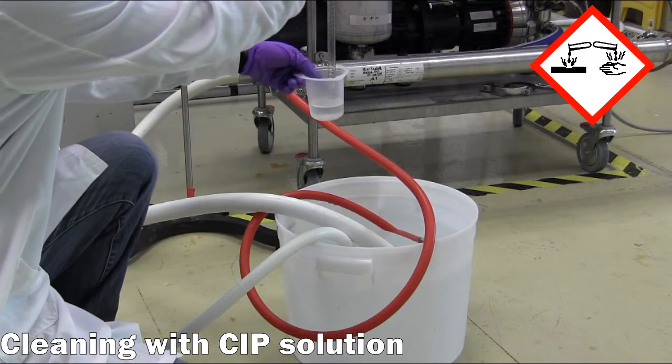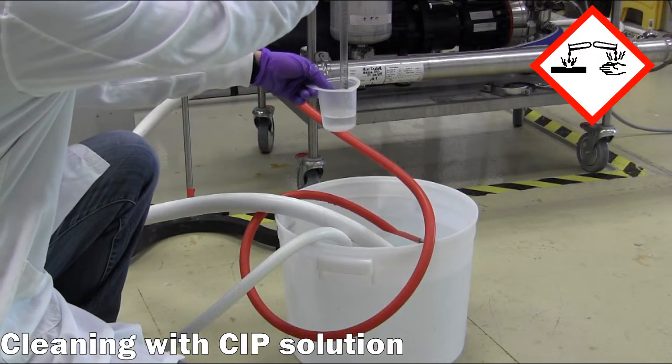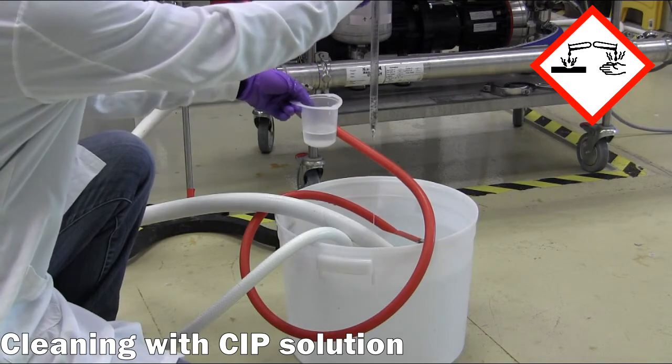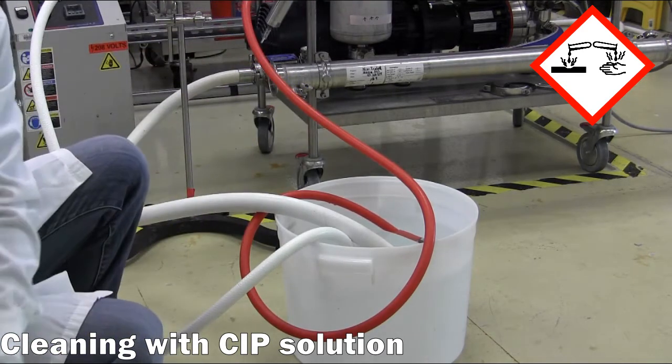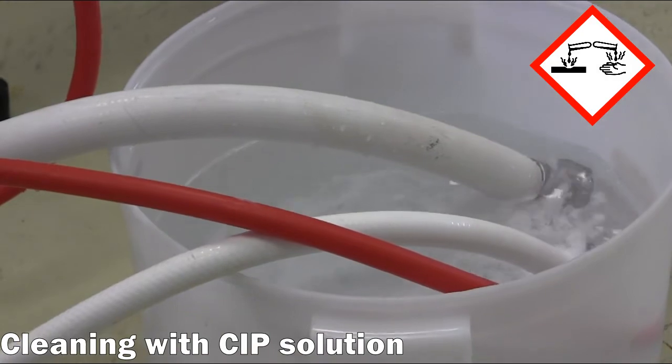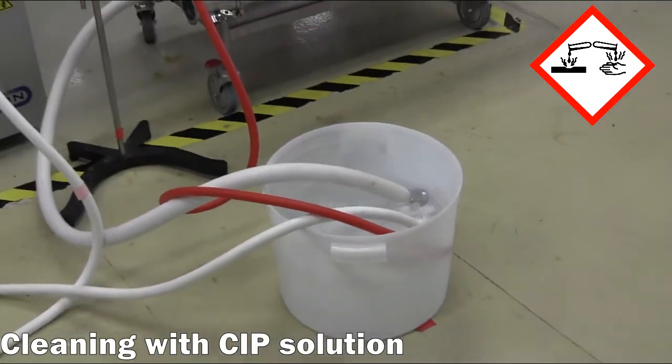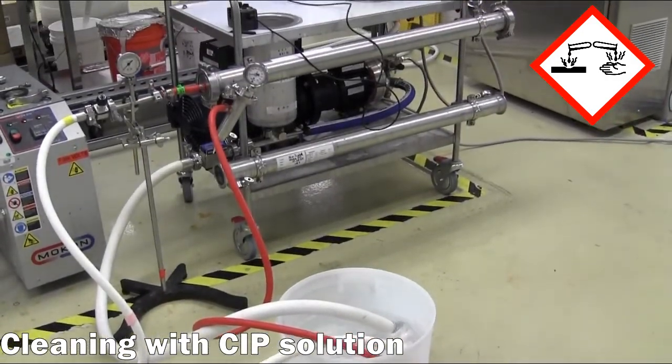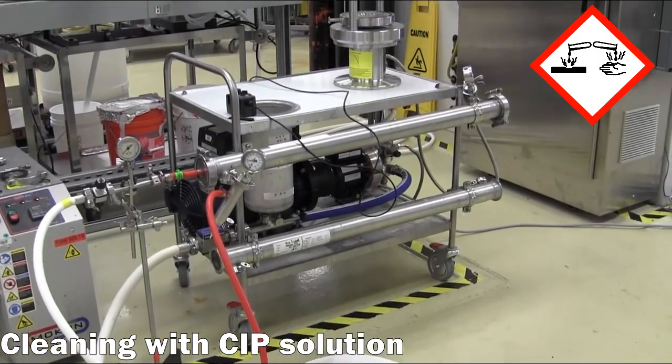Next, CIP100 is introduced to create a caustic cleaning solution that will better clear material from membrane pores and surfaces. Again, all hoses are placed in the CIP solution bucket and the solution is recirculated for 30 minutes.